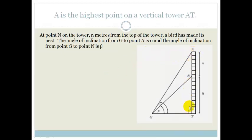So we've got A, which is the highest point of the vertical tower AT. At point N, N meters from the top, so it's a little n, N meters from the top, a bird has made a nest, so here's your nest.